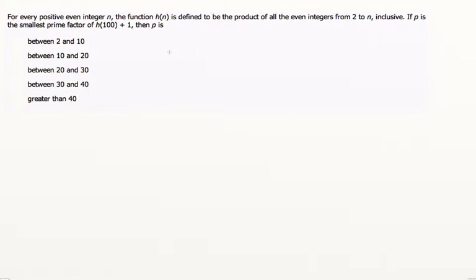So h(n), we're looking at h(n) as all the even integers from 2 to n inclusive. What that means is 2 times 4 times 6, etc., times n-2, all the way up to n-2 and n.